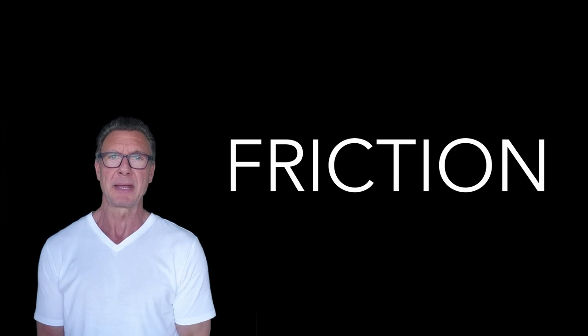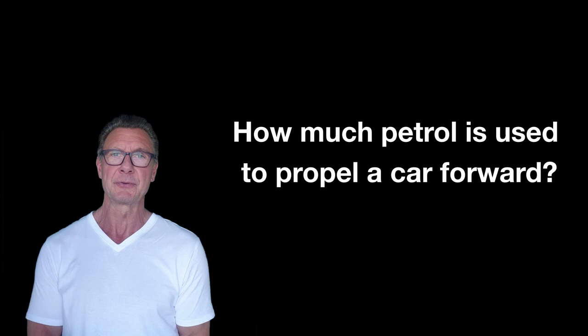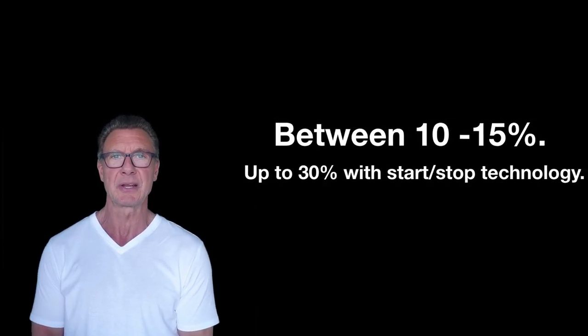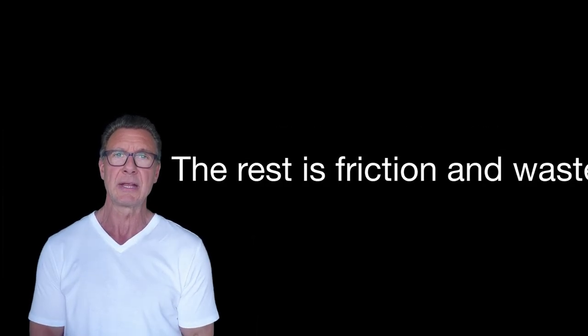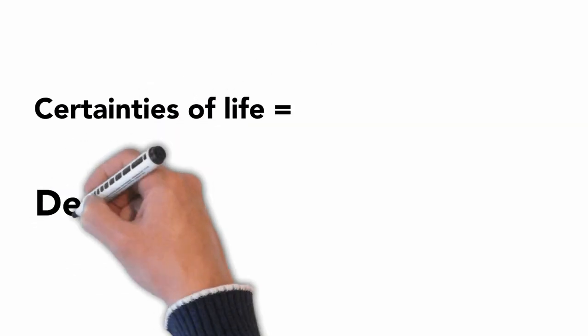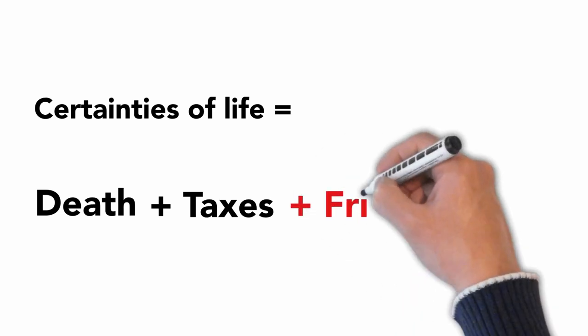For example, do you know how much petrol is used to actually propel a petrol-fueled car forward? Between 10 to 15 percent — unless it's fitted with start-stop technology, in which case it might be as high as 30 percent. The rest is friction, and hence waste. This means that friction can be added to the certainties of life alongside death and taxes.